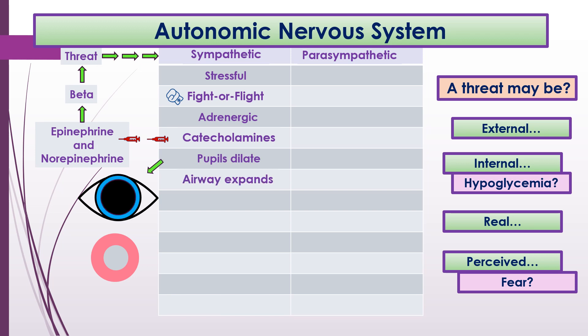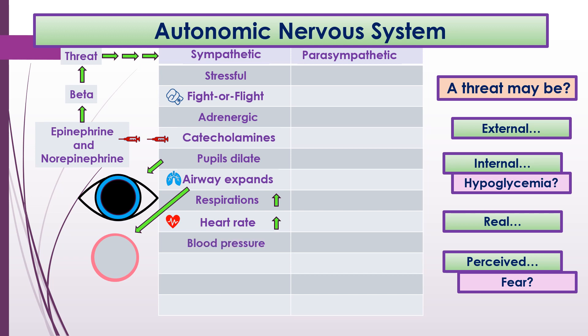When you elicit the sympathetic response: your pupils are going to dilate so you can take advantage of any available light. Your airway expands so you can take in more oxygen for your cells to run from something or fight it. Your respirations go up. Your heart rate goes up to move that oxygenated blood to the cells throughout your body. Your blood pressure goes up.